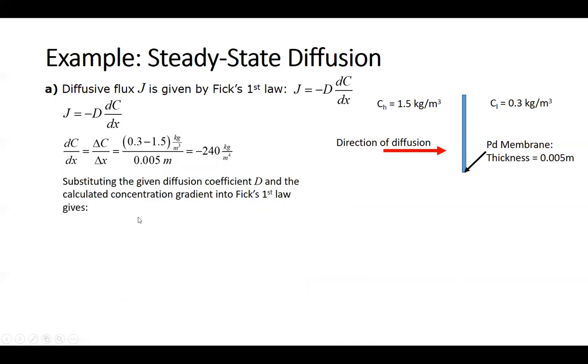Now we need to just substitute what we just calculated, the 240 kilograms per meter to the fourth, and the diffusion coefficient D into Fick's first law, and we find that the diffusive flux is 2.4 times 10 to the minus 7 kilograms per meter squared second.